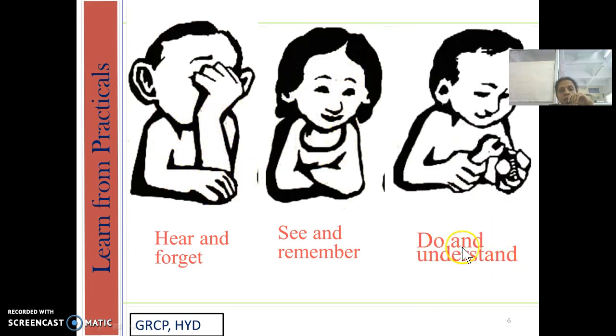Now coming to the last aspect, that is do and understand. What happens in this third case is we hear whatever the instructor gives us information or instructions, and we see whatever we are going to do, and we will try to understand through that act. By doing the concept, we can understand the concept very well. That is the importance of practicals. Just by listening and seeing, we can't understand the concept, but by doing such act, we will remember it very well.